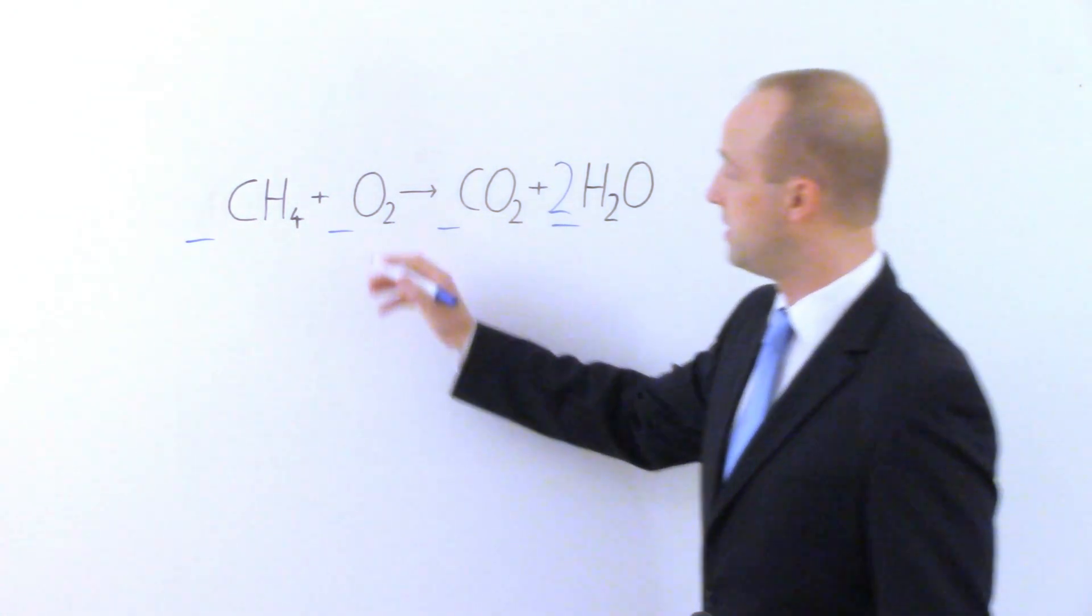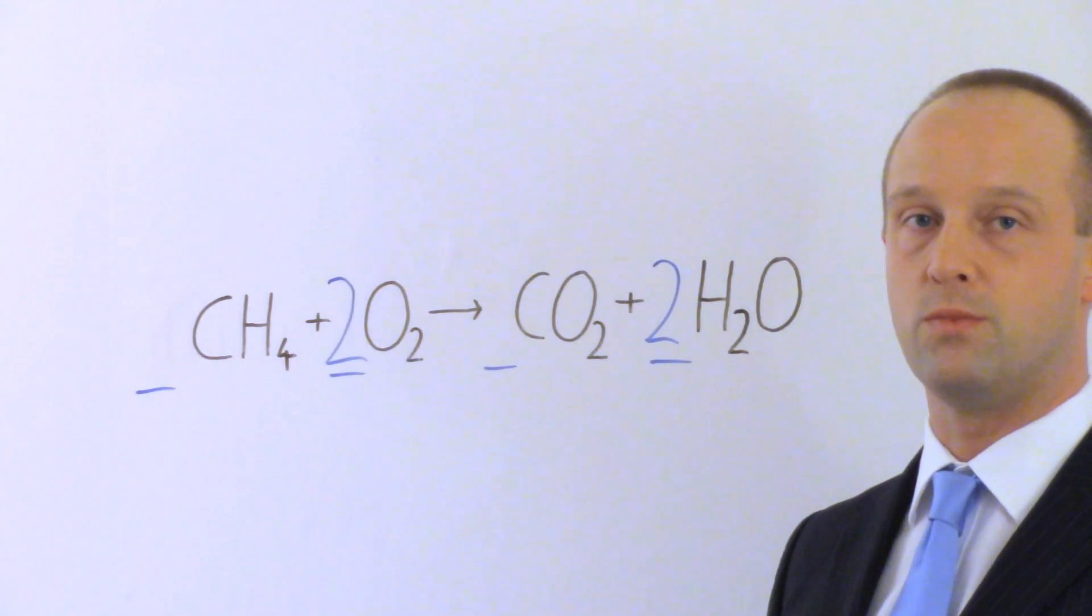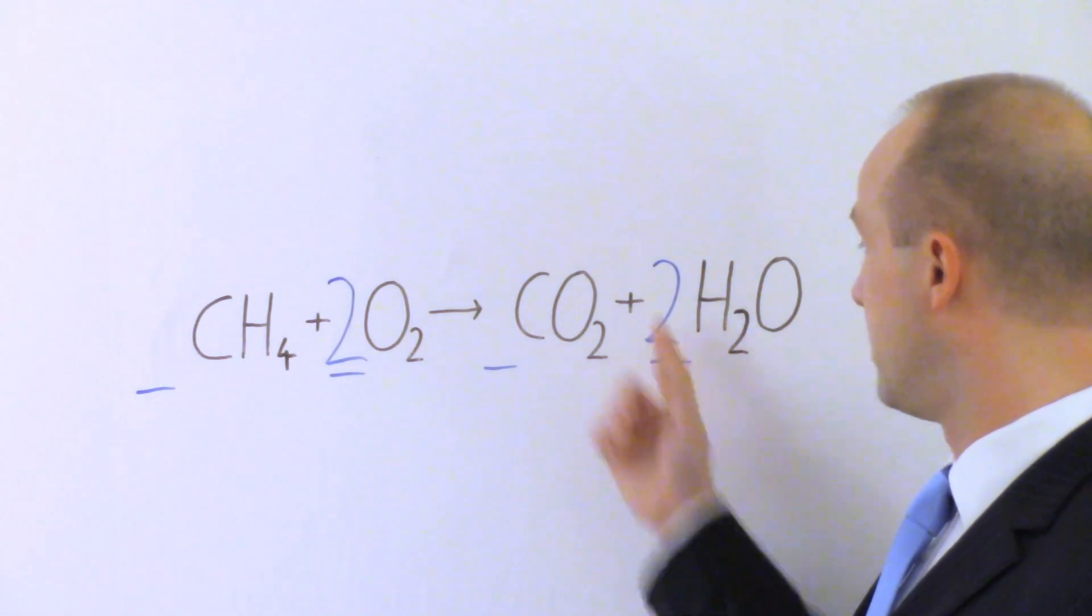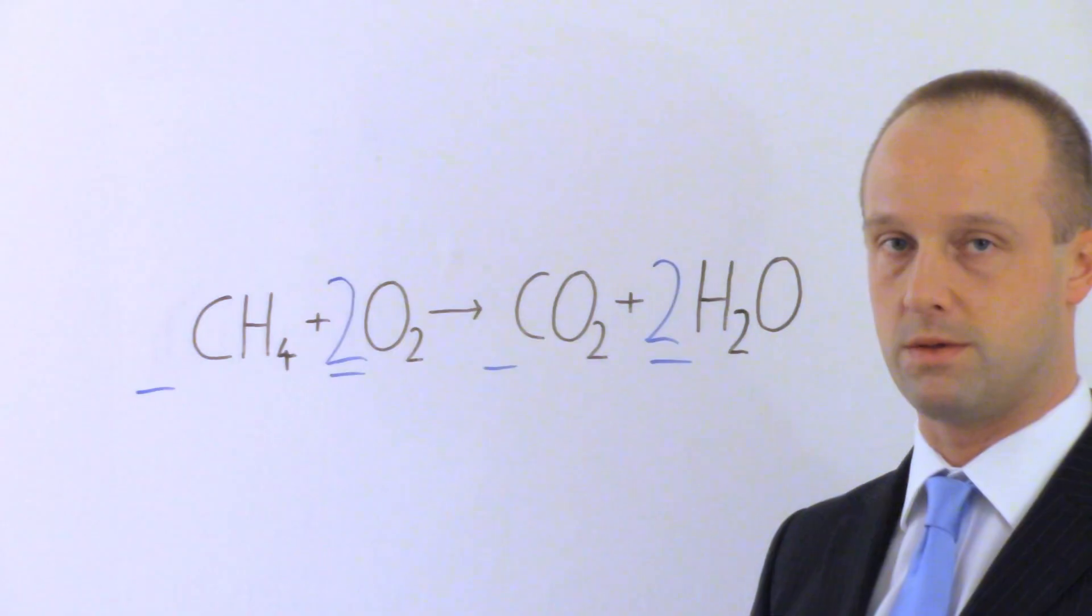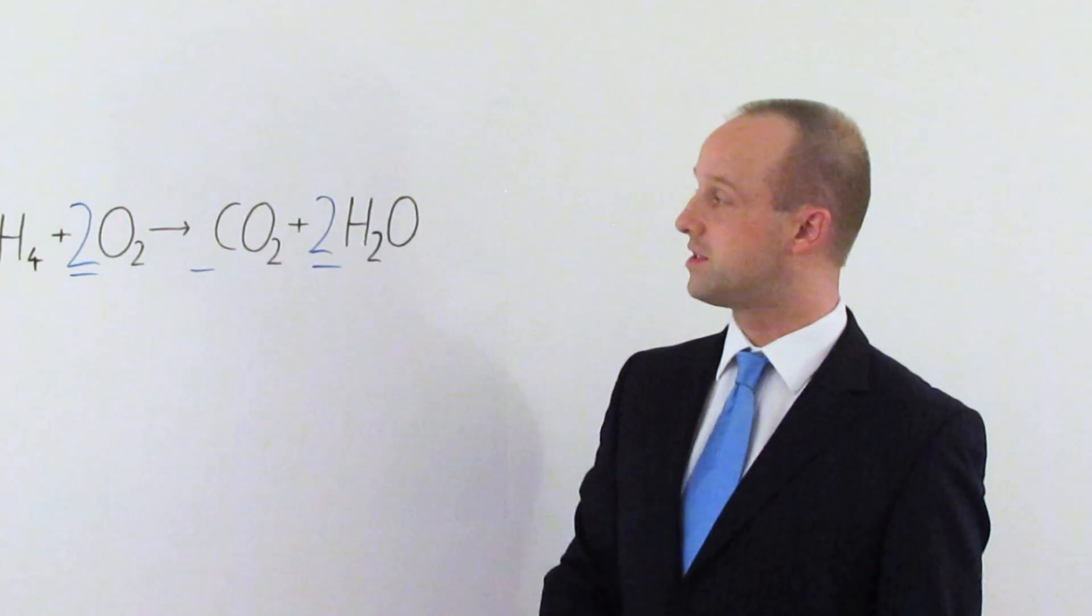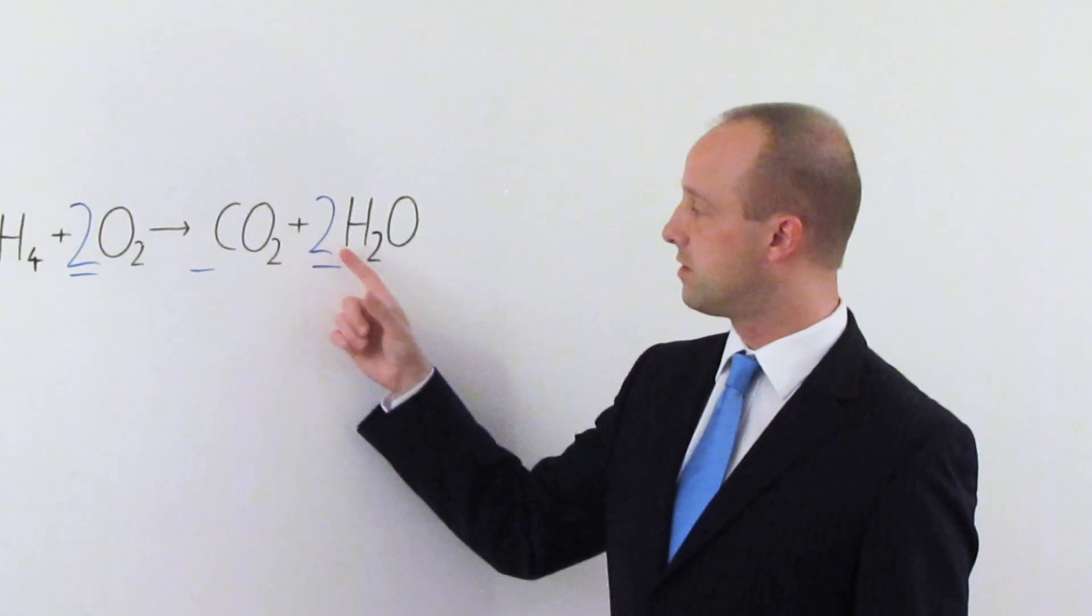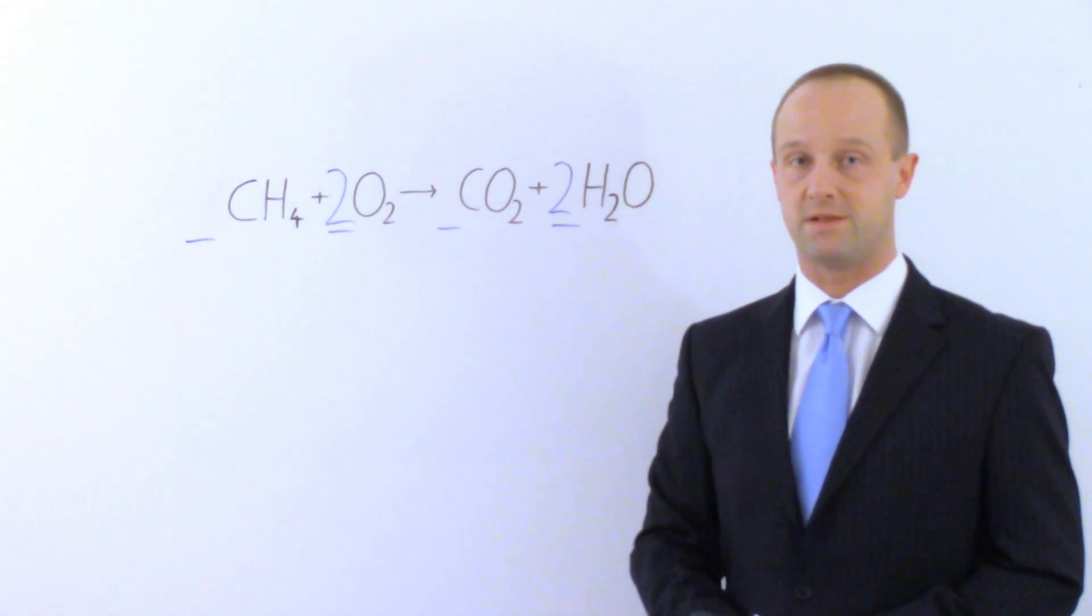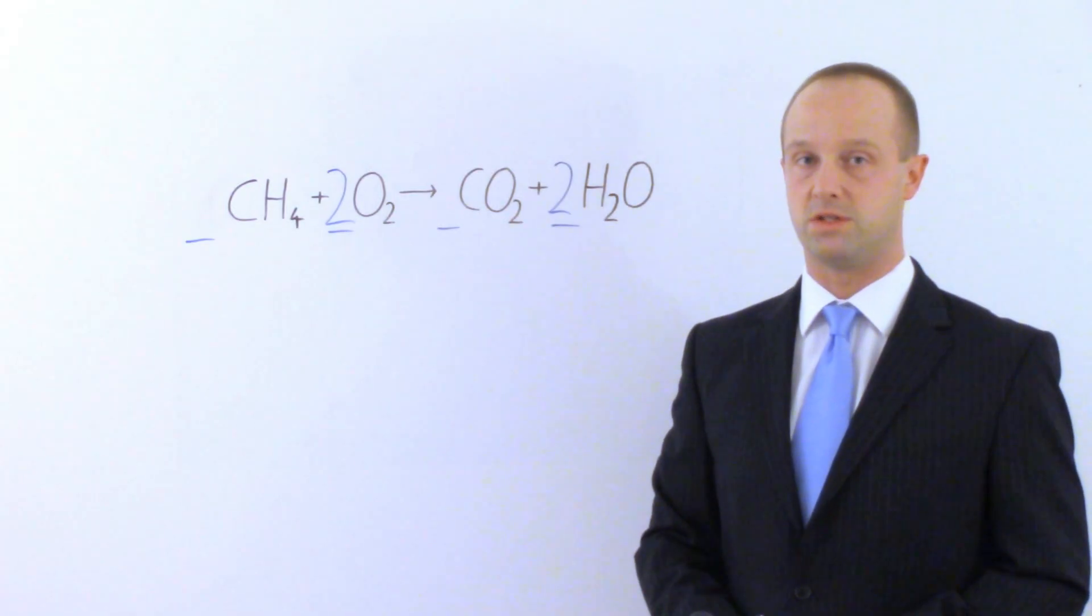Over here, I've got two oxygens, so I'm going to need to double that as well. This has solved the problem with the oxygens now. I've now got four oxygens all together here, and two plus another two oxygens here, so I've got four on each side. Let's check the other elements and make sure that this works though. I haven't done anything to the compounds that have carbon in, so that's not a problem. The carbons are still balanced. Let's have a look at the hydrogens though. I've got four hydrogens here, and I've now got two lots of two hydrogens, so I've got four hydrogens here as well. This is now a balanced equation. I've got the same number of carbons and oxygens and hydrogens on both sides.